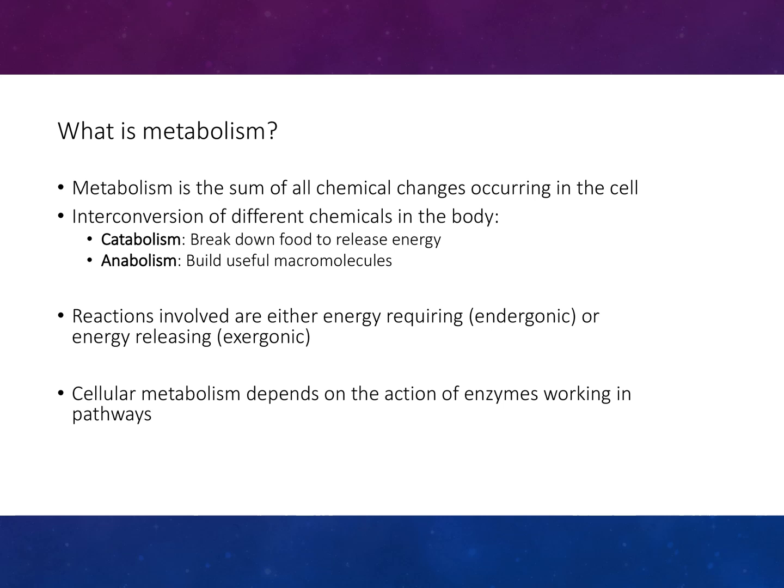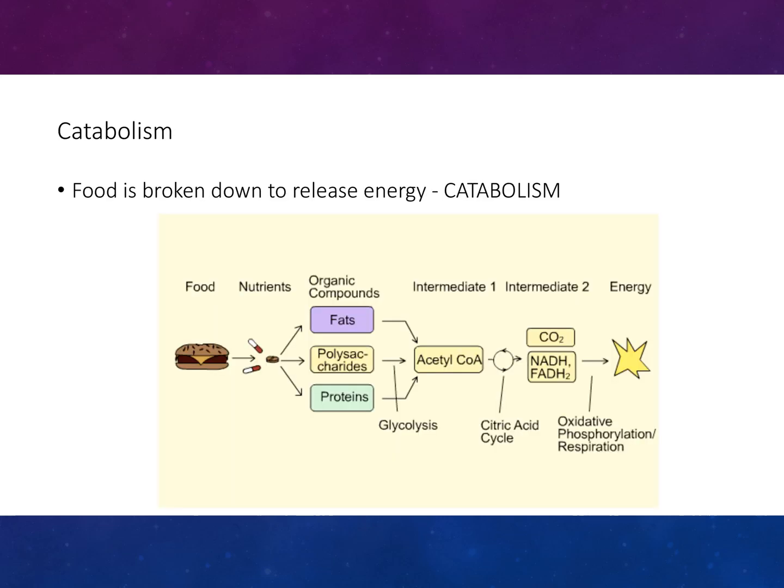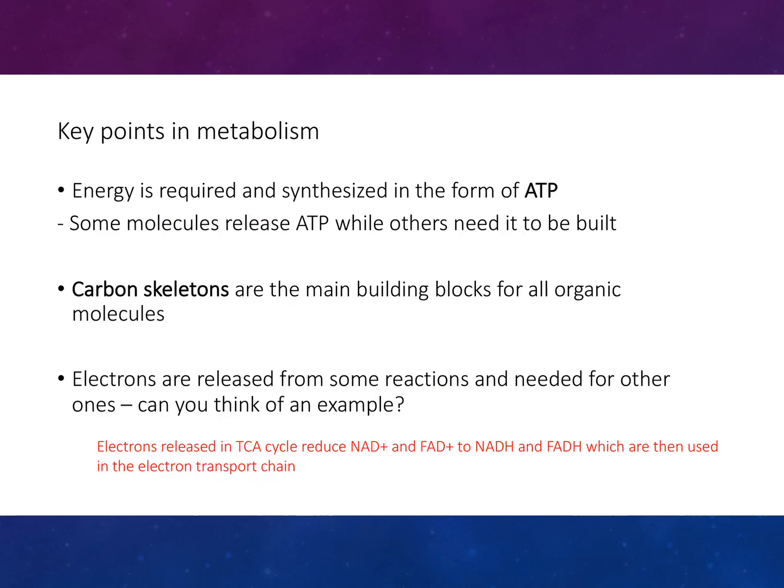Cellular metabolism depends on the action of enzymes working in pathways. Food is broken down to release energy in catabolism. Key points of metabolism: energy is acquired and synthesized in the form of ATP; some molecules release ATP while others need it to be built; carbon skeletons are the main building blocks for all organic molecules; and electrons are released from some reactions and needed for others.